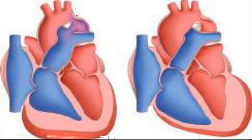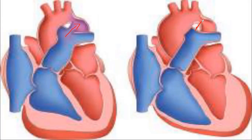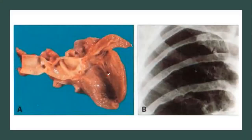Here you can see aortic coarctation — this is the pre-ductal form, the infantile form, because you can see a patent ductus arteriosus, producing cyanosis in the lower extremities. And here you can see the coarctation within the area of the ligamentum arteriosum with no patent ductus arteriosus — this is the adult post-ductal form. In the adult form there will be hypertension in the upper extremities and hypotension in the lower extremities.